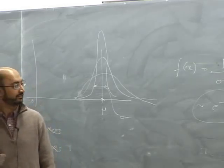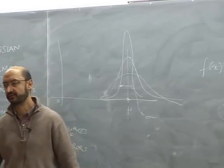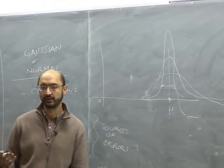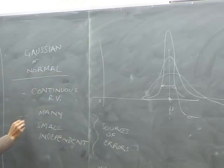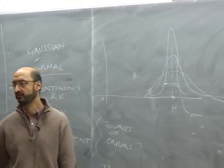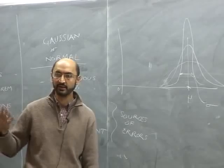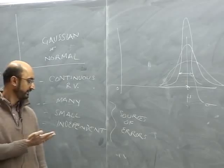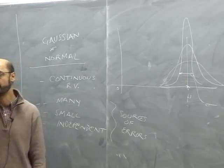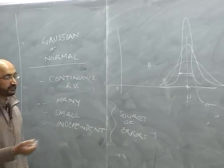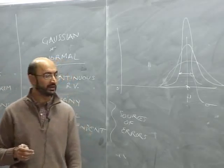We should remember that the normal distribution, despite looking nice, has a couple of underlying assumptions. One is that the errors must be many, small, and independent. We often assume that noise on a channel is Gaussian, which means there's no memory — the noise variables are independent of each other. If there are correlations among the sources, then Gaussian is not a good model.